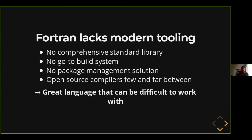Let's start with modern tooling. We don't have a comprehensive standard library, specifically with general-purpose tools, kind of like the standard library that Python, Go, Rust, or perhaps even C++ have. Fortran has a nice set of intrinsic procedures and modules that are mostly oriented for numerical work, but if you want to do anything more general purpose — any kind of advanced text processing, perhaps networking — you need to look elsewhere for third-party libraries, if there are any.